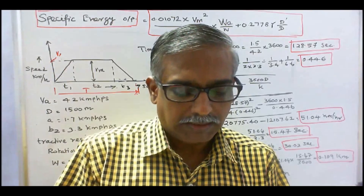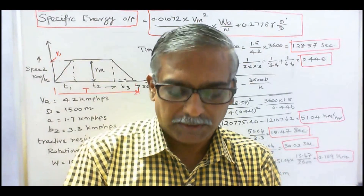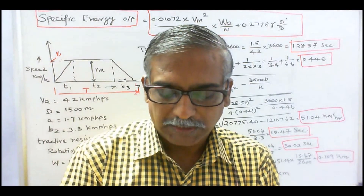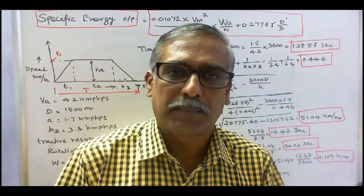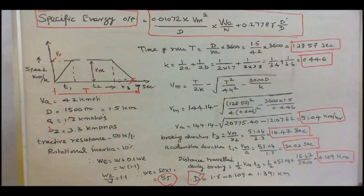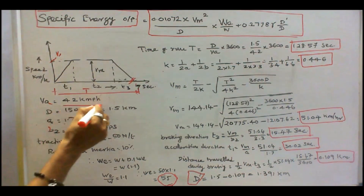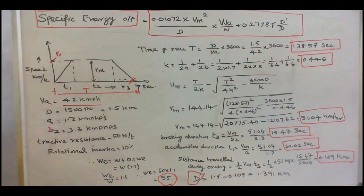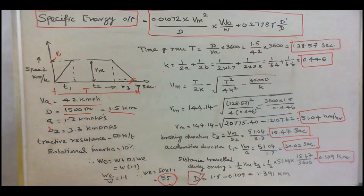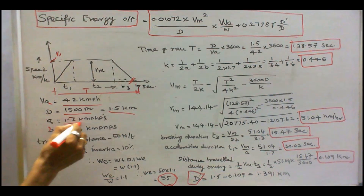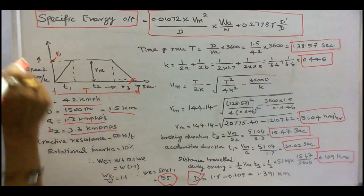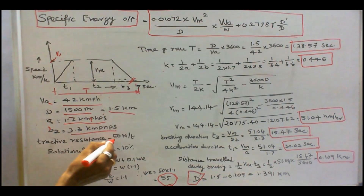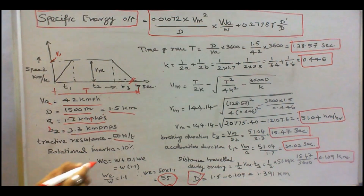Assume tractive resistance is 50 N per ton and allow 10% for rotational inertia. Assume efficiency of motors is equal to 90%. So in this problem: Va is given as 42 km per hour (average speed), distance between two stations is 1500 meters or 1.5 km, acceleration is 1.7 km per hour per second, braking retardation is 3.3 km per hour per second, tractive resistance is 50 N per ton, and rotational inertia is 10%.